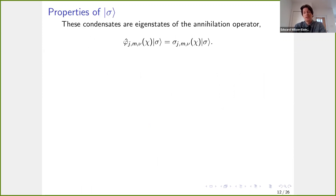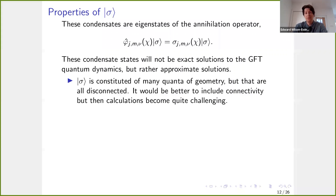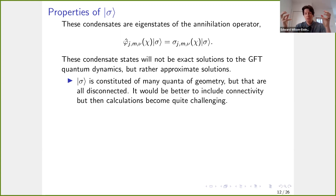A very nice property of this state is that it's an eigenstate of the annihilation operator: acting on it with the annihilation operator just gives back the same state multiplied by the condensate wave function. Of course, this is a very simple state, so we can't expect it to be an exact solution to the GFT quantum dynamics — at best an approximate solution. This condensate state is constituted of many quantum geometries, but they're all disconnected. By entangling different quantum geometries you could connect them, but here that hasn't been done. Including connectivity makes the calculations much more challenging, and this is an outstanding goal for this approach to cosmology.